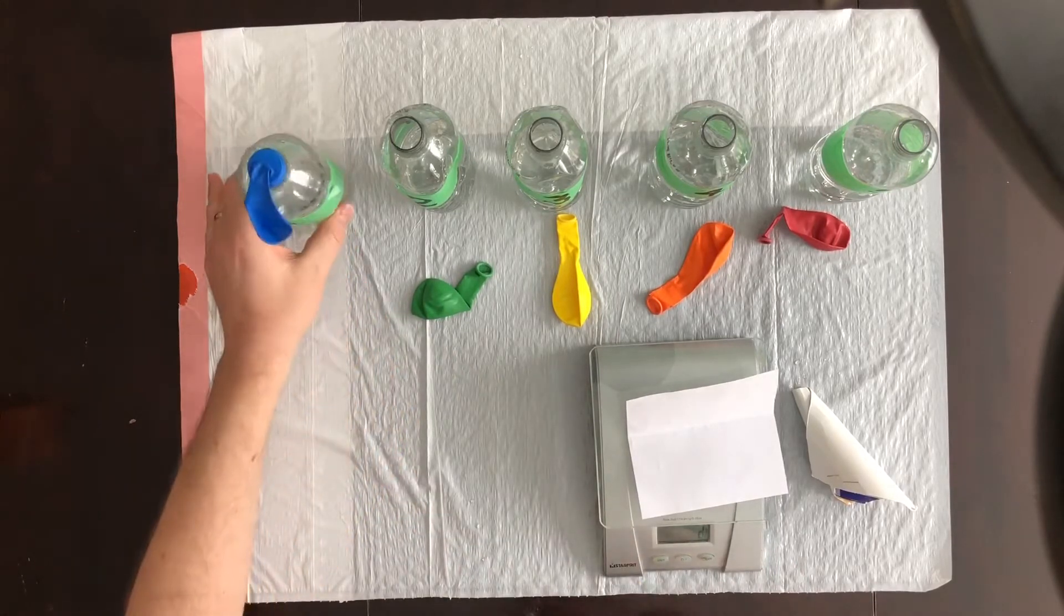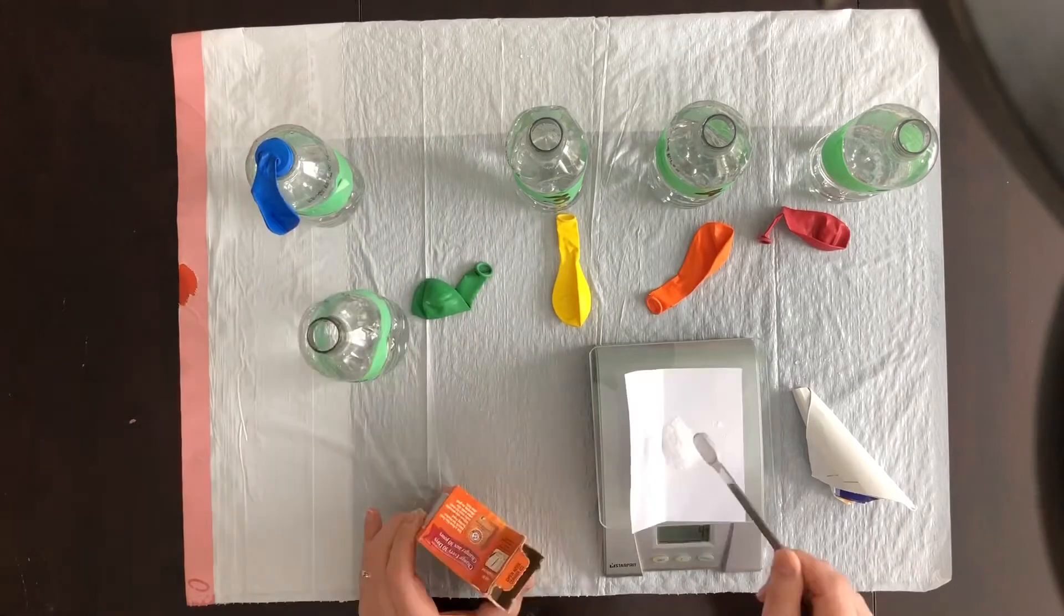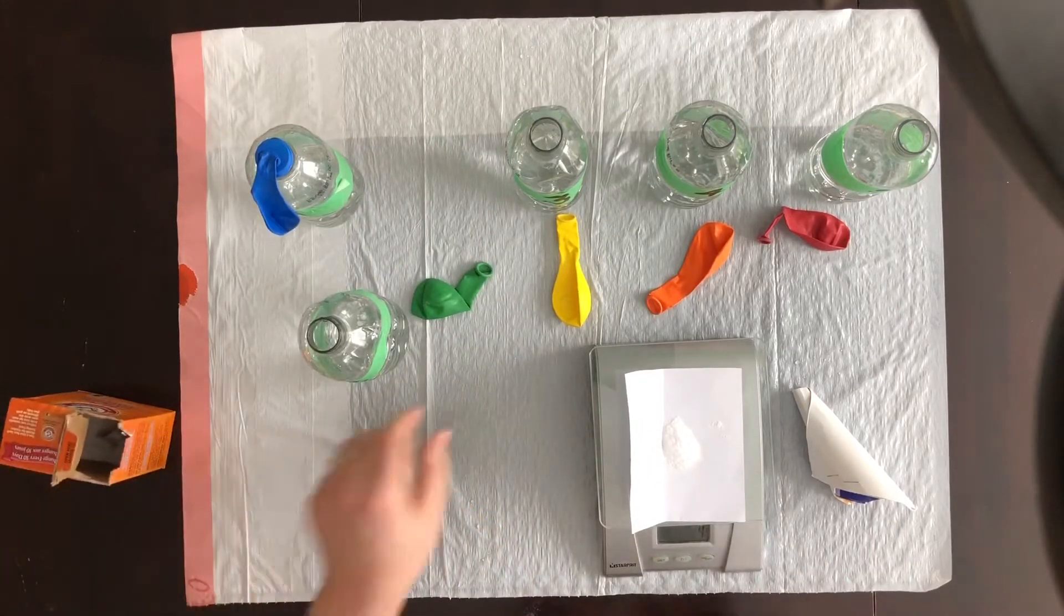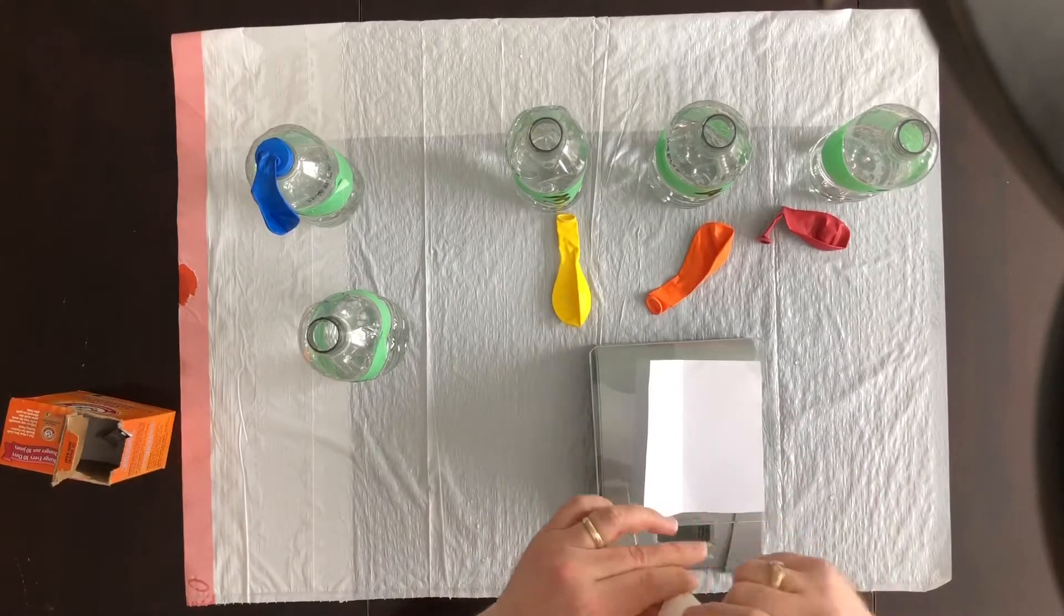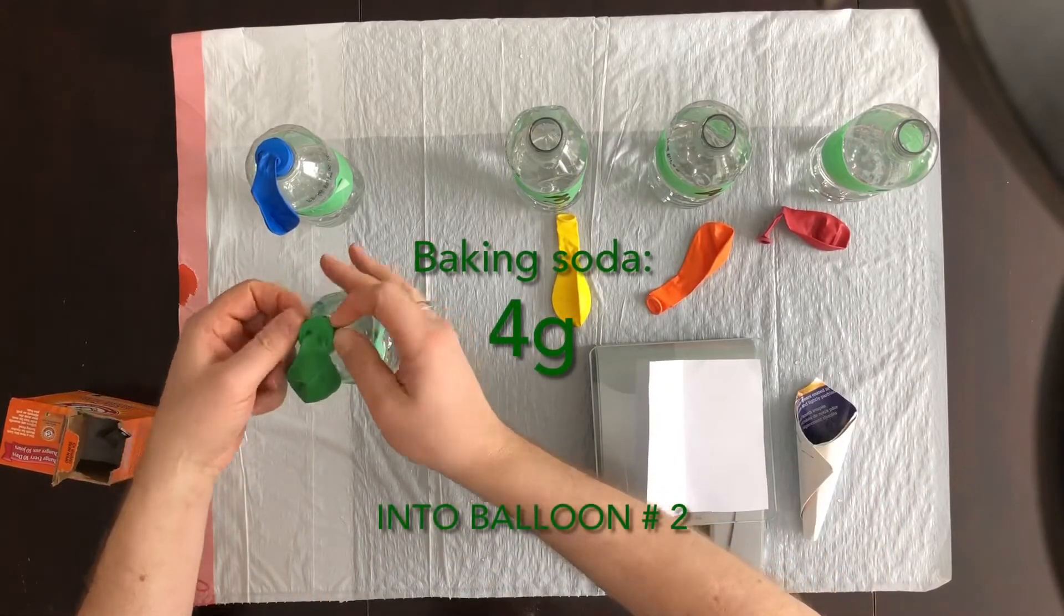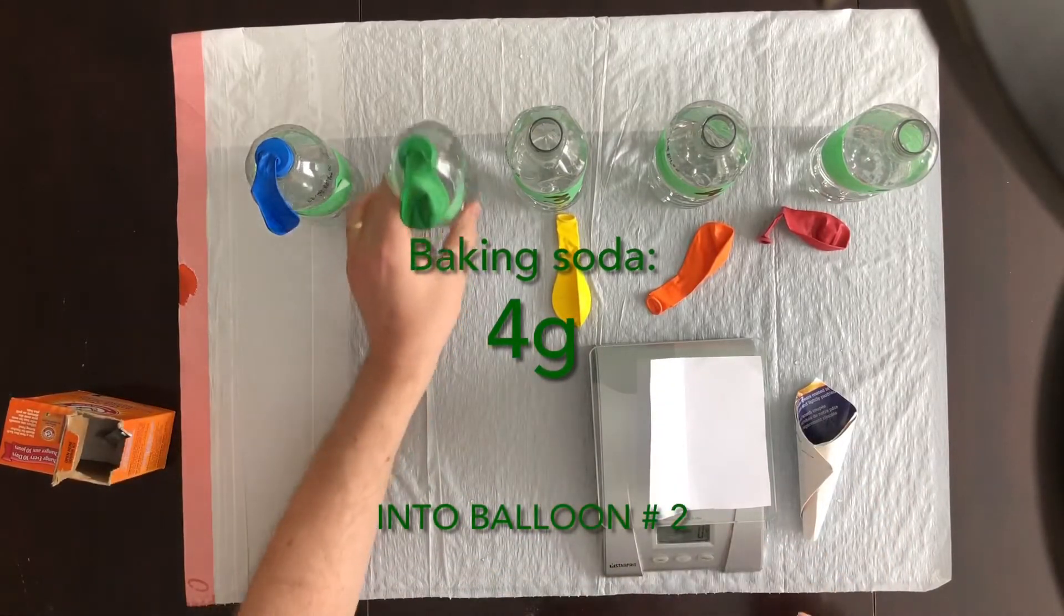Here's the hard part. You need to get that baking soda down into the rounded bottom of the balloon so that you can snap the balloon onto the neck of the bottle without any of the baking soda falling into the vinegar. See that?